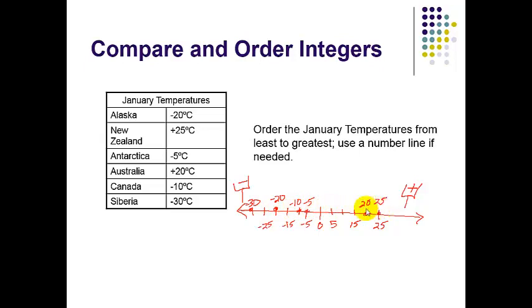Now that I've placed these on the number line, they're automatically in order from least to greatest because left is less. So negative 30, negative 20, negative 10, negative 5, 20, and 25. I always like to count and make sure I have all my numbers. So I have 1, 2, 3, 4, 5, 6. I have 1, 2, 3, 4, 5, 6. I've accounted for all of my numbers. Using a number line can help you to stay organized.